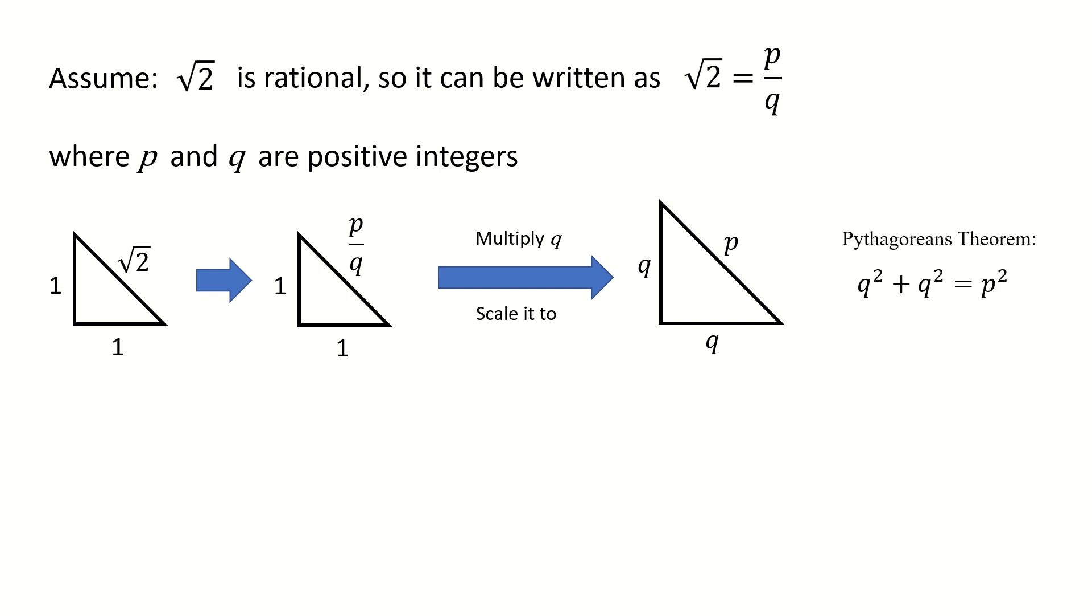So we know from the Pythagorean theorem that q² + q² = p². And we know here p and q are integers, so when the hypotenuse equals this integer p, this equation has integer solutions for q.